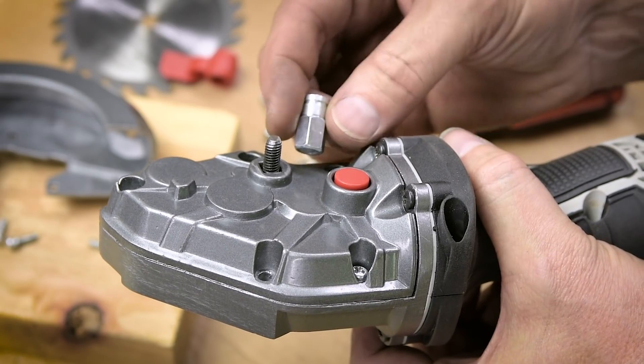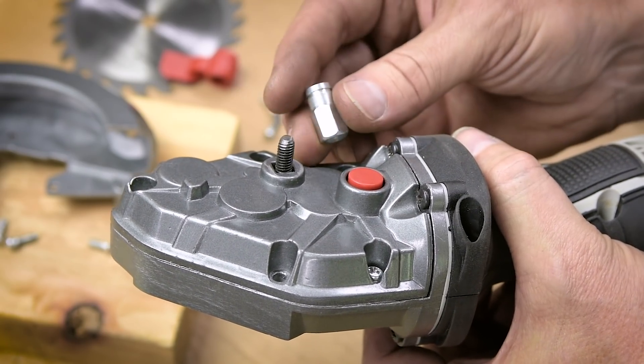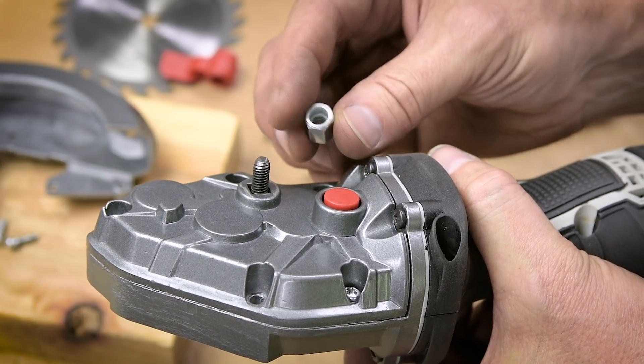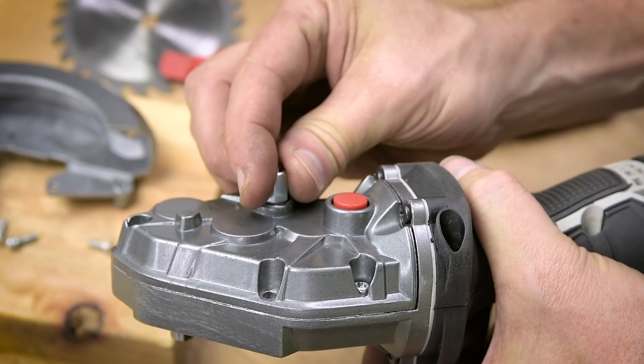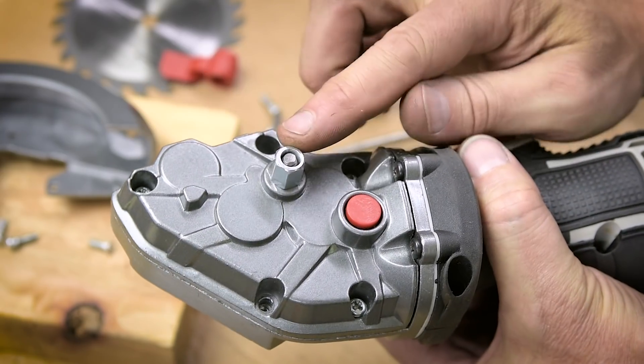This bolt, which is now loose and wobbly, has its head inside the gearbox, so I can't just leave it rattling around and I can't really get it out of there. So here's my solution. I just shortened one of the extension nuts and secured it right in place.